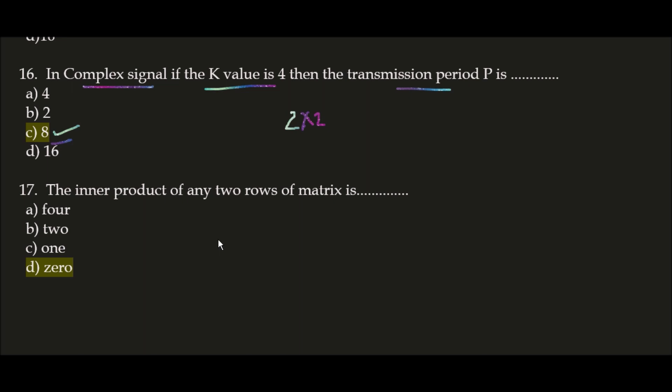Next question: the inner product of any two rows of a matrix is 0. This is a frequently asked question — the inner product of any two rows of the matrix is 0.